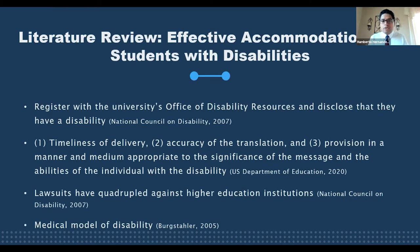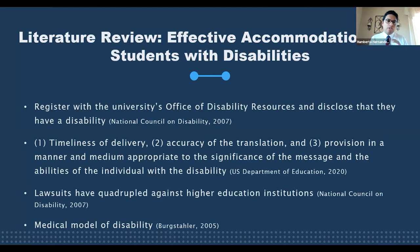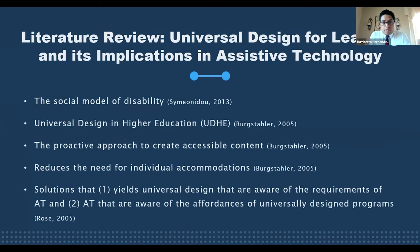This may explain why lawsuits have quadrupled against higher education institutions in the last decade, according to the National Council on Disability. This all has a name: the medical model of disability, explained in the work of Burke Stoller. Her work says that professionals identify an individual's functional limitation and prescribe an adjustment allowing this person to fit into an established environment. Through this process, the accommodation model does not always provide an equitable experience, and can lead to unnecessary dependence on the accessibility office.